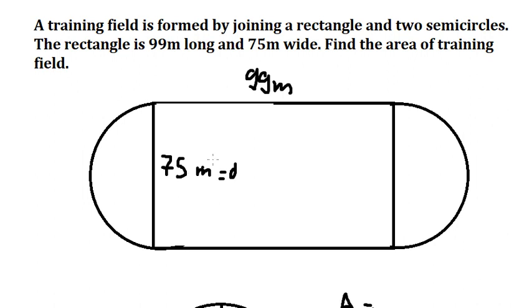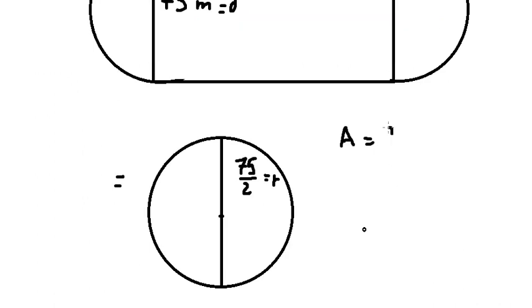multiplied by the width of the rectangle. So we have 99 multiplied by 75 plus the area of one circle.